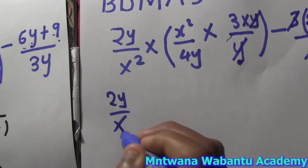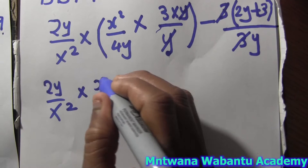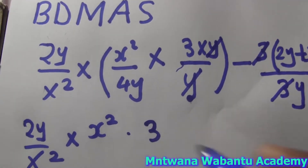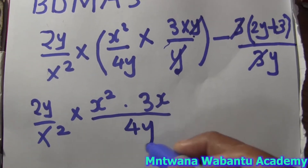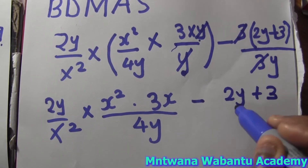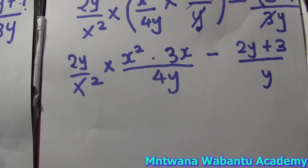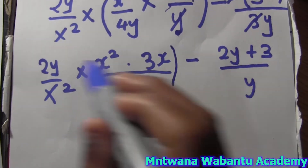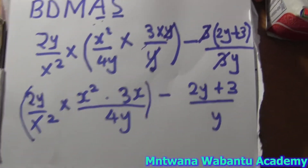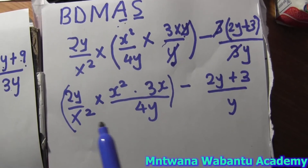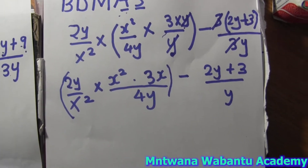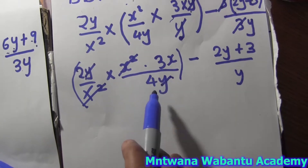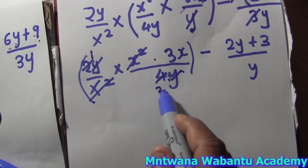So now we have 2y over x squared, and everything is multiplication. Times x squared, then times 3x, and over 4y. And this group will have 2y plus 3 over 1y. Some of the stuff here is going to cancel. We have x squared and x squared — the same thing, they cancel. 1y and 1y cancel. So we have 2 times 3 equals 6 over 4. And 6 over 4 simplifies to 3 over 2.